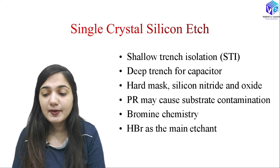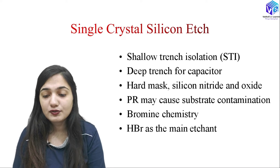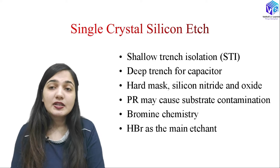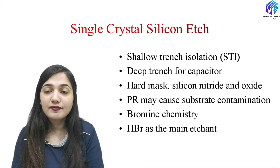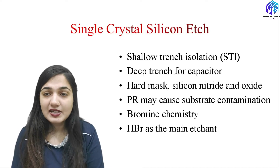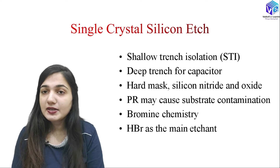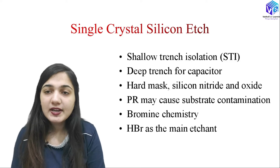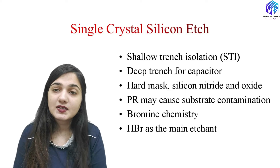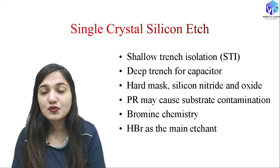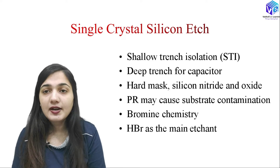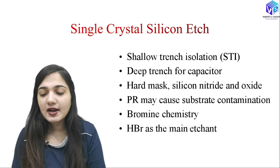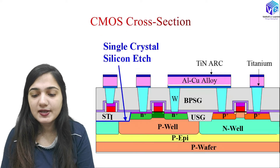I can also use a hard mask — silicon nitride and oxide etching. The photoresist may cause substrate contamination, so we have to avoid that possibility. We have to make this single crystal silicon etching very carefully, avoiding contamination from the photoresist. I use bromine, so I need to know the bromine chemistry. In previous classes I discussed fluorine chemistry, but here I will be using bromine — specifically HBr, hydrogen bromide, as the main etchant.